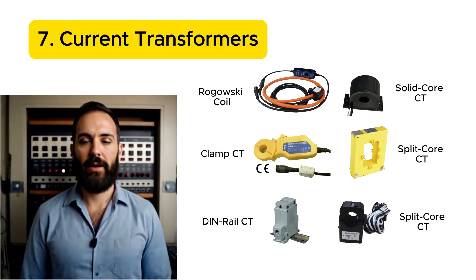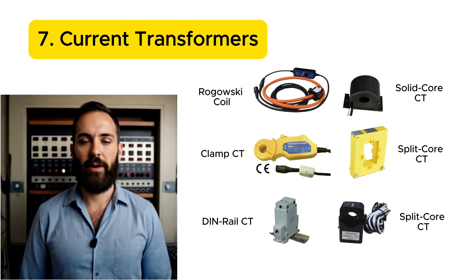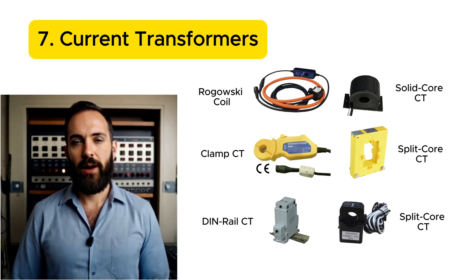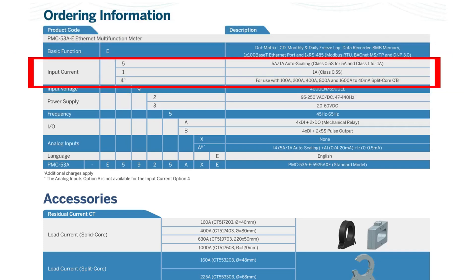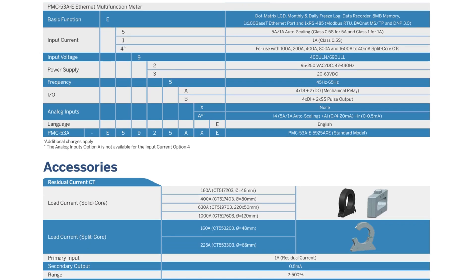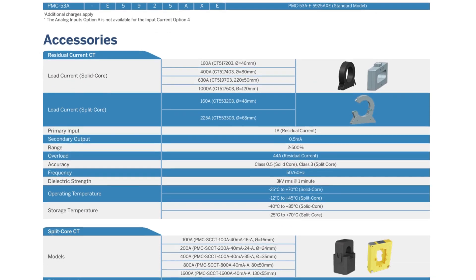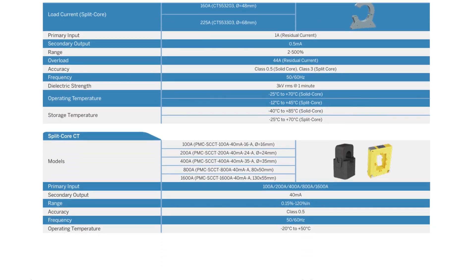Number seven: current transformers. The most common types of CT used for digital meters include split core CT, solid core CT, Rogowski coil, and DIN rail CT. They normally come in one amp or five amp ratings in the market, but beware that some CT are lower than one amp. So when ordering a meter, make sure to check the input current specifications and select the proper CT that works with the model.